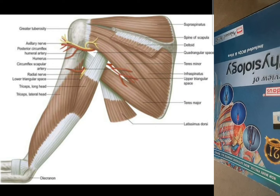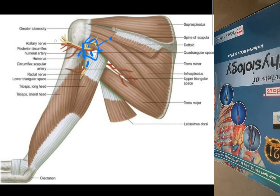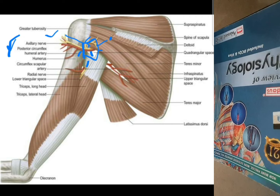The axillary nerve then passes through the quadrangular space. You can see the quadrangular space here — it has four borders with specific contents. One nerve and one artery pass through it. When the axillary nerve exits the quadrangular space, it is accompanied by the posterior circumflex humeral artery. These two structures are the contents of the quadrangular space.